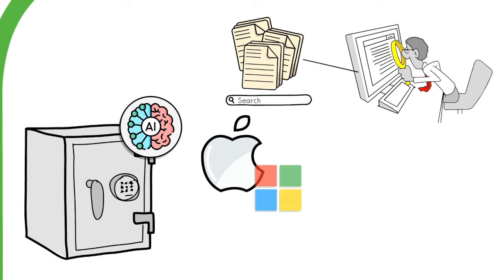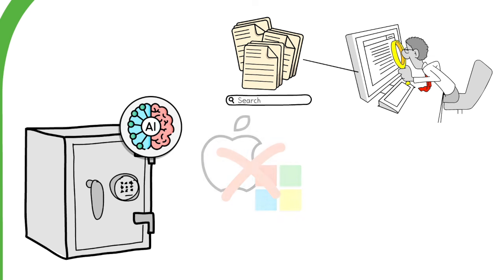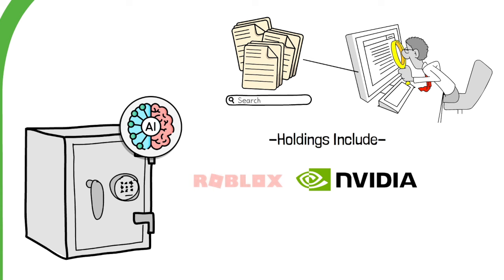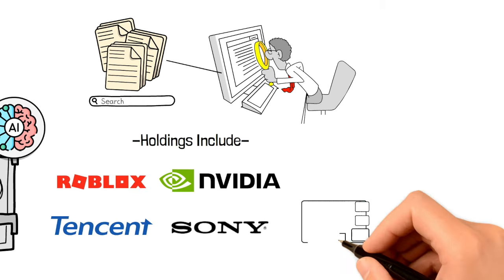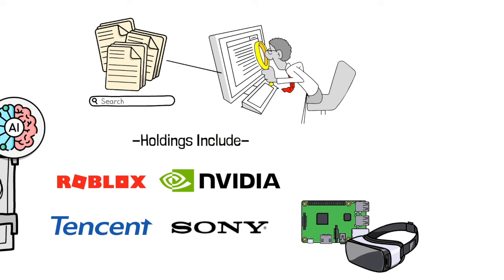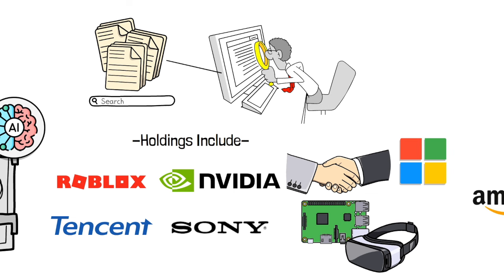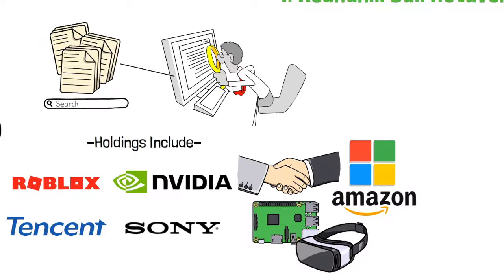Unlike many other technology ETFs that concentrate heavily on big names like Apple and Microsoft, META includes a unique mix of companies driving innovation in AI and the Metaverse. Key holdings include NVIDIA, ROBLOX, Tencent, and Sony. NVIDIA, a key player in AI, is important for designing graphics cards and AI-powered virtual machines. It also has strong partnerships with Microsoft and Amazon's AWS, making it a vital player in the AI ecosystem.